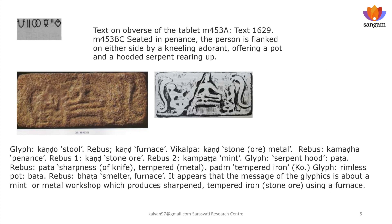Another tablet M14453A has a message in about six script signs and a remarkable narrative of a person seated on a stool, flanked by two adherents and two cobra hoods. The stool 'Kando' — rebus 'Kand' = furnace. Alternatively 'Kand' is stone, stone metal, ore metal, or iron ore. 'Kamada' — seated in penance posture — rebus 'Kand' = stone ore, rebus 'Kampatta' = mint. Serpent hoods 'Pata' = sharpness/tempered; 'Padam' tempered; 'Fada' = metals manufactory. A rimless pot — 'Bata' — rebus 'Bata' = smelter furnace. The message of the hieroglyphs appears to be about a mint or metal workshop which produces sharpened tempered iron using stone ore and a furnace.